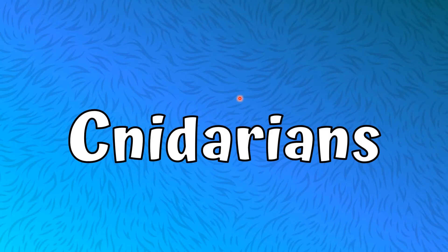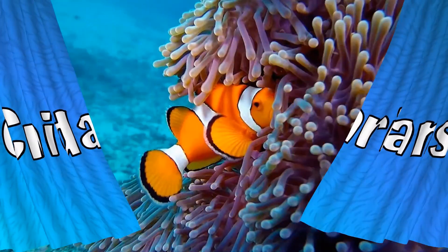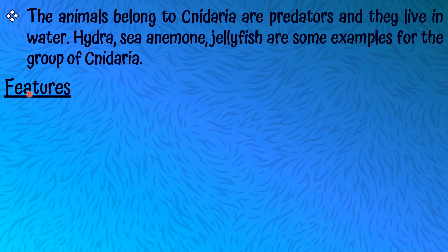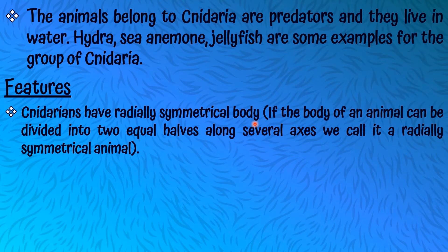The first group is Cnidarians. The animals belonging to Cnidaria are predators and they live in water. Hydra, Sea Anemone, and Jellyfish are some examples for the group of Cnidaria. Cnidarians have a radially symmetrical body. Radially symmetrical means if the body of an animal can be divided into two equal halves along several axes, we call it a radially symmetrical animal.